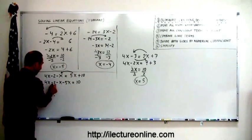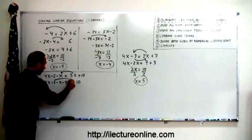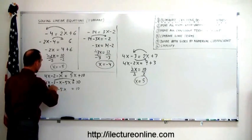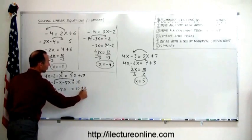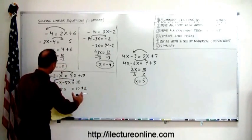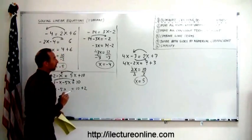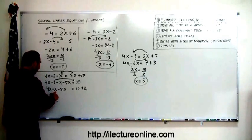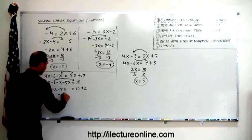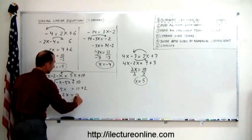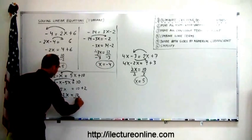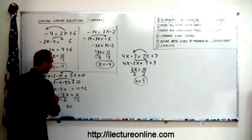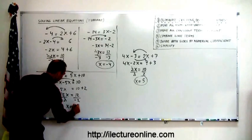Next step: move all constant terms to the right. The constant minus 2 on the left moves to the right and becomes plus 2: so 4x minus x minus 5x equals 10 plus 2. Now we've separated all variable terms and all constant terms. Combine like terms: 4x minus x is 3x, minus 5x is minus 2x, and 10 plus 2 is 12 — so minus 2x equals 12. Divide both sides by the numerical coefficient minus 2 — this cancels out — and x equals 12 divided by negative 2, which is minus 6.